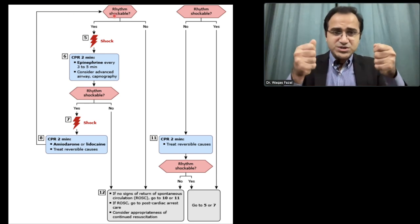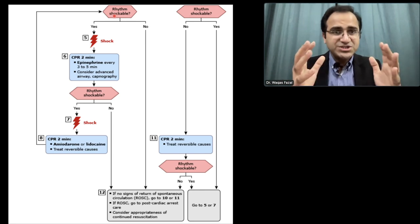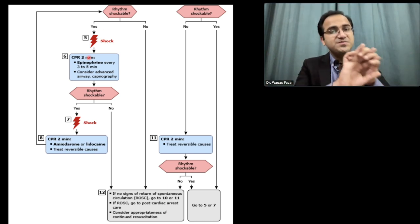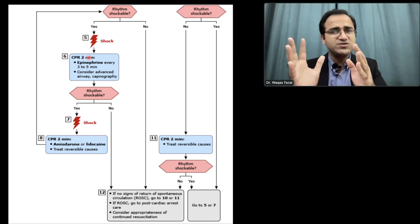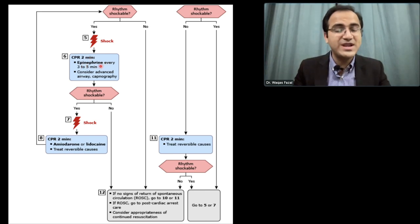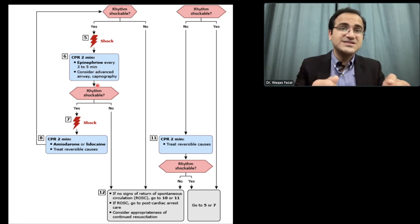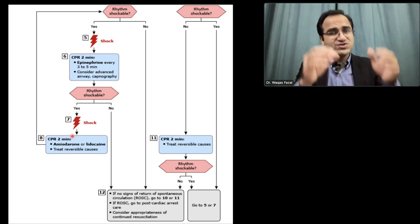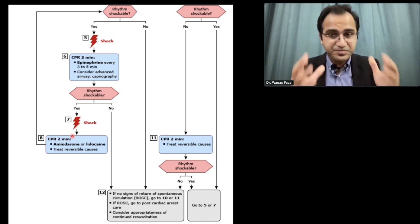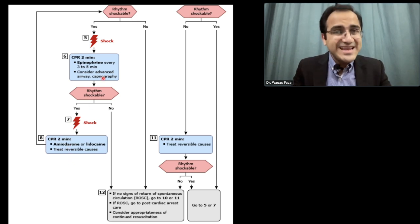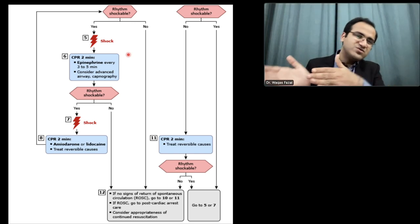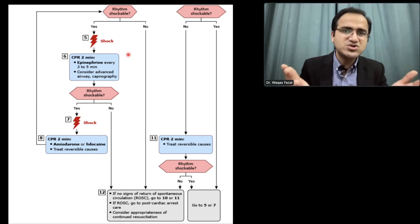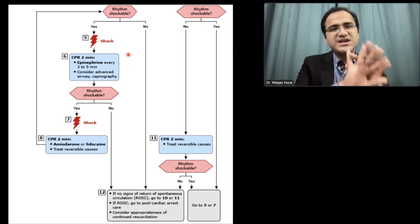After starting CPR and giving shocks, if the ECG still shows ventricular fibrillation, you shock again and continue CPR without breaks. You give epinephrine 1 mg every 3 to 5 minutes and reassess the rhythm. If the rhythm remains shockable and shows V-fib, you restart CPR, give chest compressions, and give amiodarone or lidocaine to abort the rhythm. You also treat reversible causes.